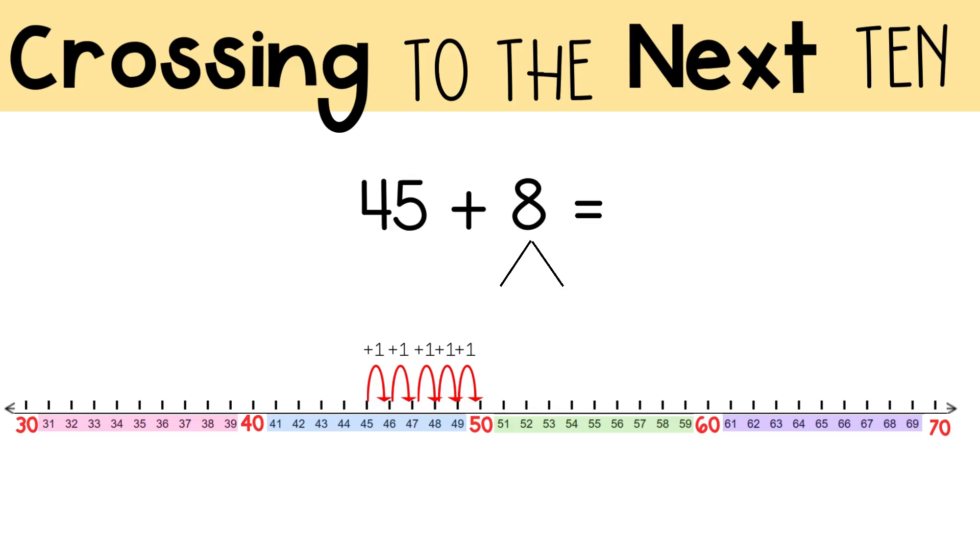Then you needed to make 3 more jumps for a total of 8 jumps. Your number bond should show how you broke up 8 into 5 and 3. Your total should be 53. Did you get that?